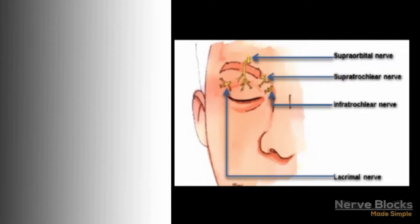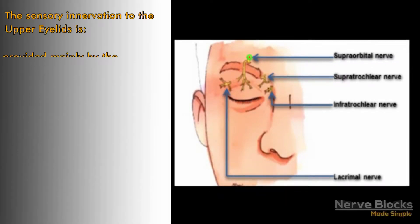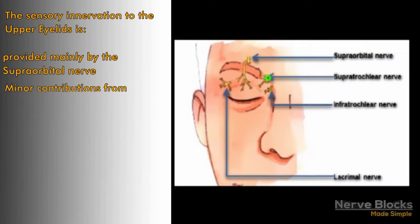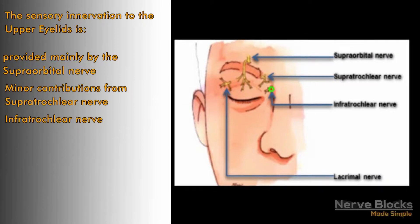Blockade of the upper eyelid. Sensory innervation to the upper eyelids is provided mainly by the supraorbital nerve, with minor contributions from the supratrochlear nerve, the infratrochlear nerve, and the lacrimal nerve.